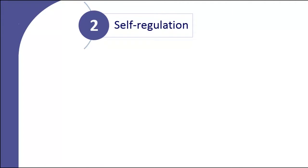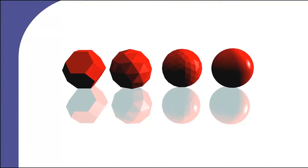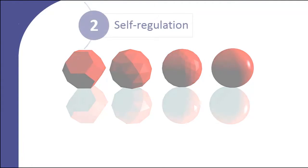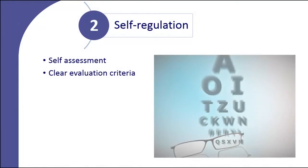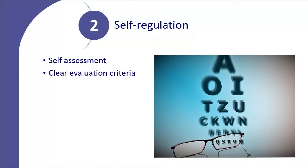Learners many times lose their motivation in learning because they don't recognize their own progress. They are too close to their own learning and are often unable to see that they have developed and improved over time. The instructor's role is then to provide learners with opportunities to identify their learning. Some of the ways are frequent and specific feedback, opportunities to self-assess, rubrics, checklists, and so on.